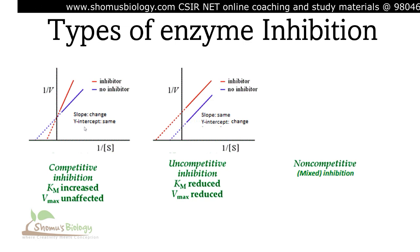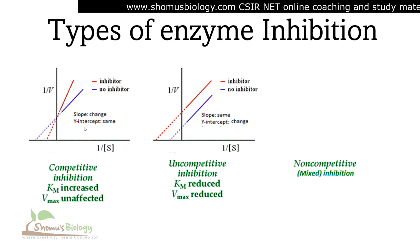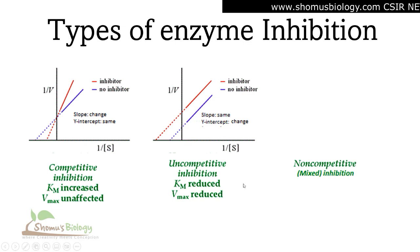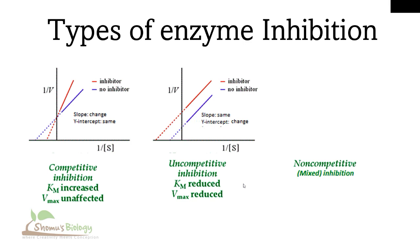In uncompetitive inhibition, both Km and Vmax are reduced. On the double reciprocal plot, the inhibited and uninhibited lines appear as parallel lines. A reduced Km means the enzyme's affinity for its substrate actually increases, but the Vmax can never be reached — the maximum velocity with inhibitor is always lower than without inhibitor.